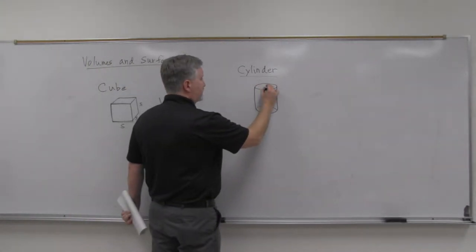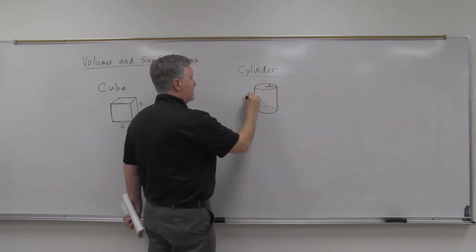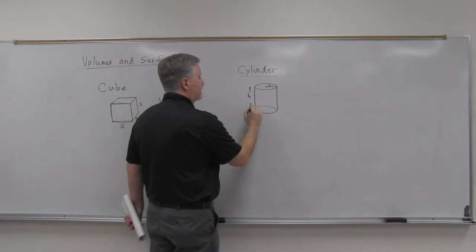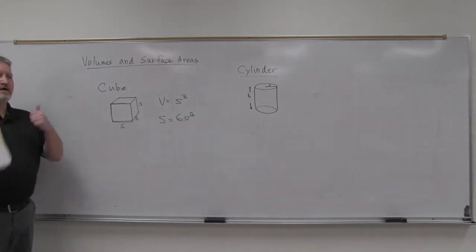On a cylinder, of course, you need the radius of the circle, and you need the height, how tall the cylinder is. Those are the two things you need to calculate the volume and surface area.